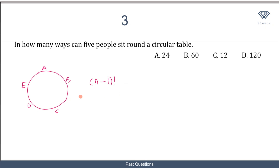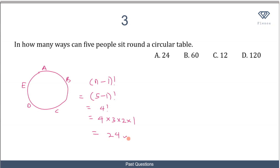There are 5 people, so this becomes (5 − 1) factorial, which is 4 factorial. And 4 factorial is 4 × 3 × 2 × 1, which equals 24. So there are 24 ways in which 5 people can be seated around a circular table, and that makes A the correct option.